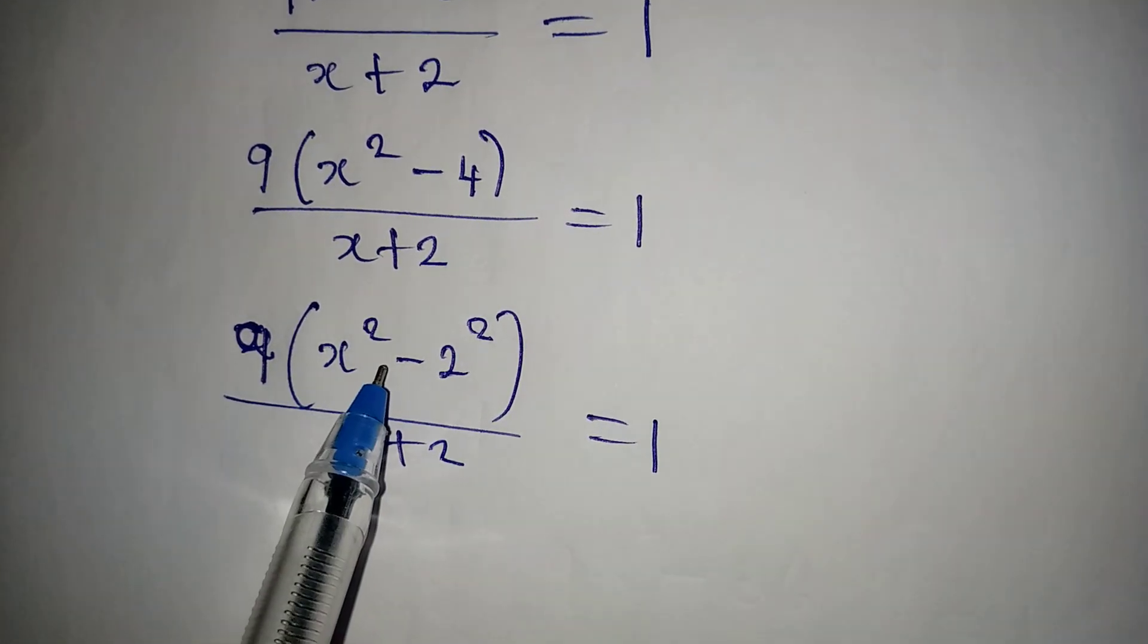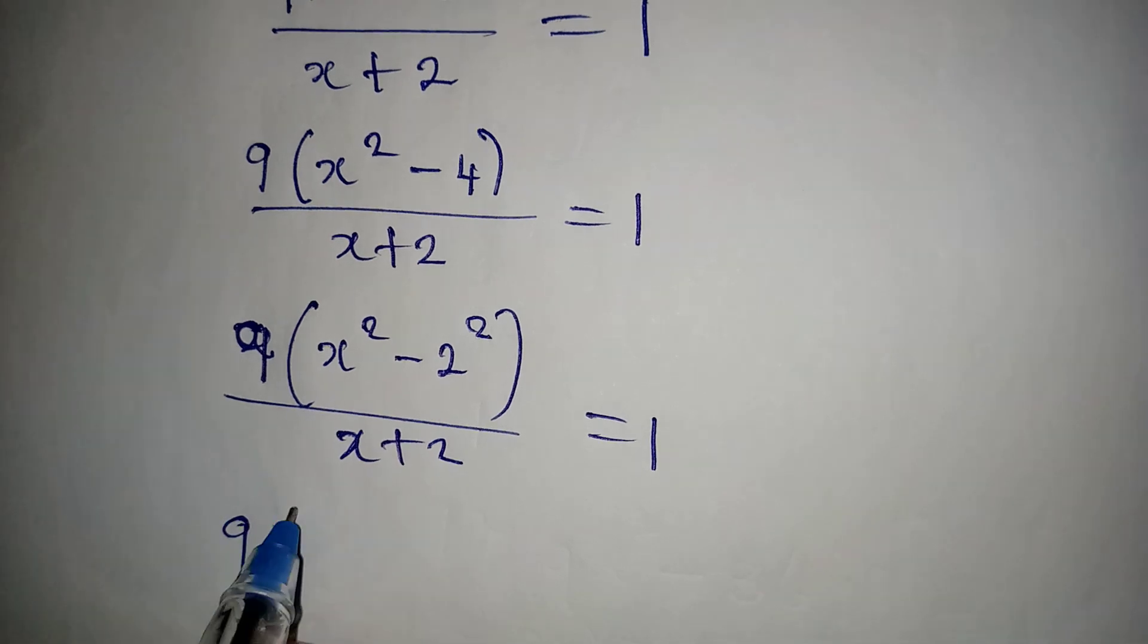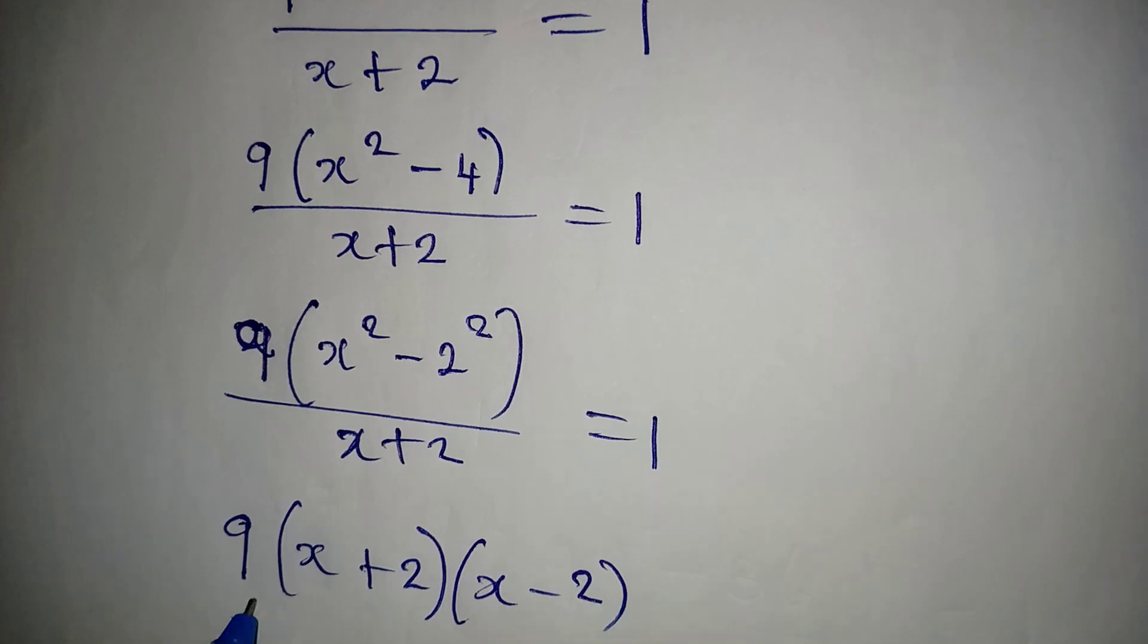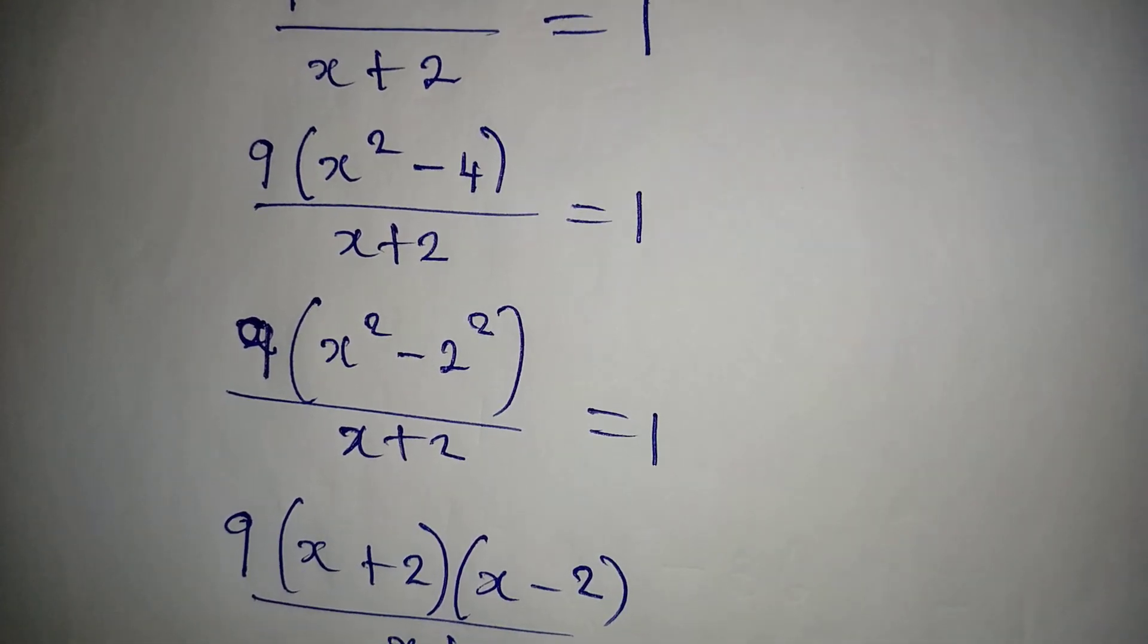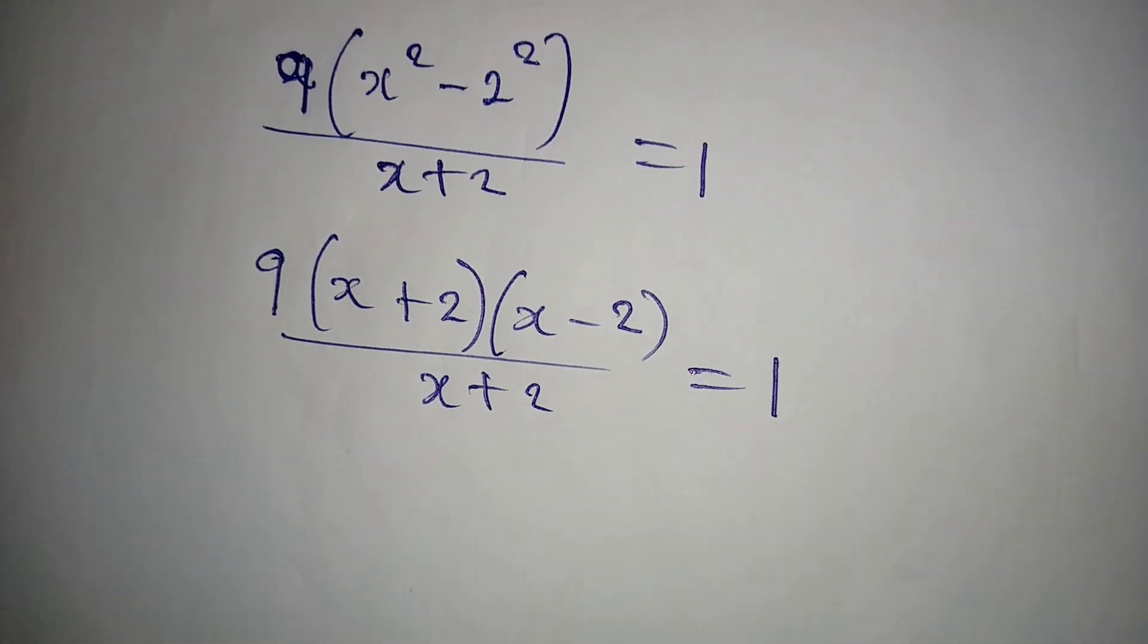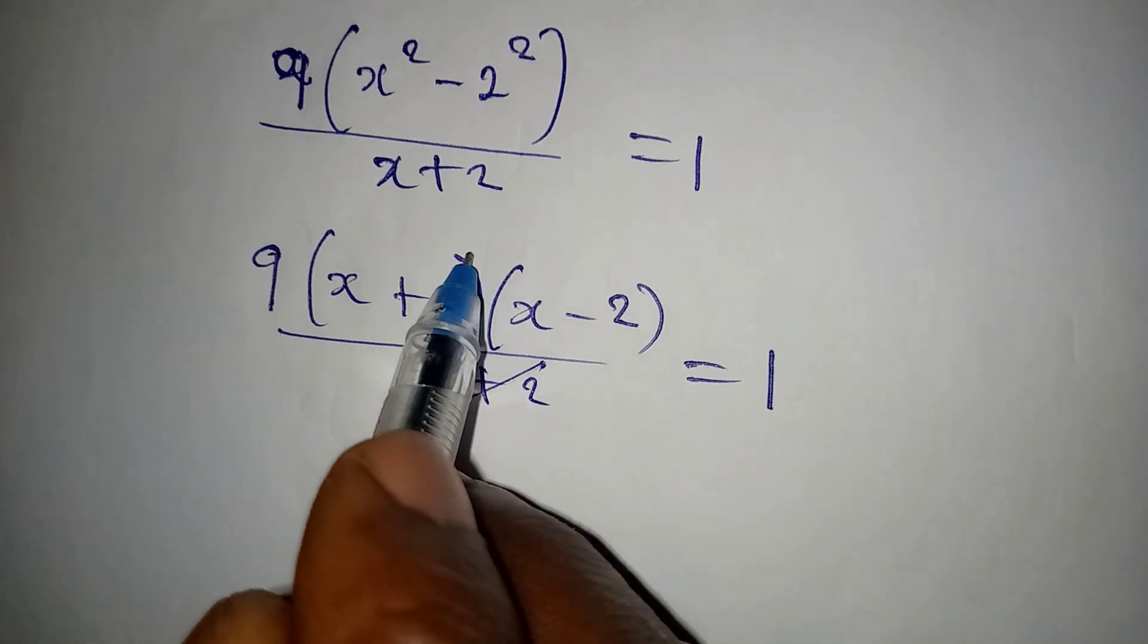Now apply your difference of two squares. So we have 9 times x plus 2 times x minus 2, and this is over x plus 2, which is equal to 1. Now the x plus 2 terms cancel.